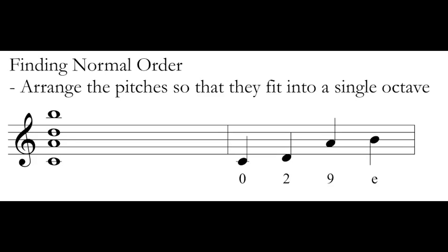I've got a chord here with a C, an A, a D, and a B in it, or as we would now talk about, a 0, a 9, 2, and an 11. The first step to finding normal order is arrange the pitches so that they fit into a single octave. I fit them all into a single octave. I put C, then D, then A, then B: 0, then 2, then 9, then 11.